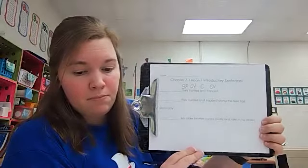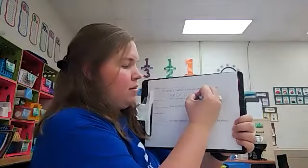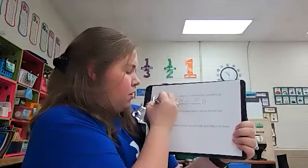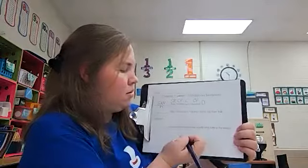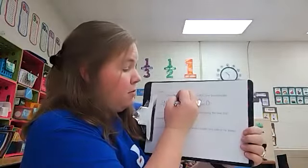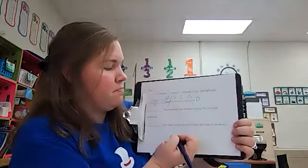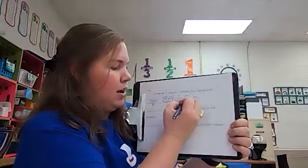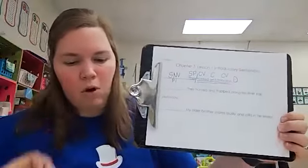So this is a period, statement, declarative sentence. It follows subject, noun, verb, pattern one. We still are going to divide our sentence before the first verb. So our subject is they. The predicate is hunted and trapped. This is how to label sentence number one.